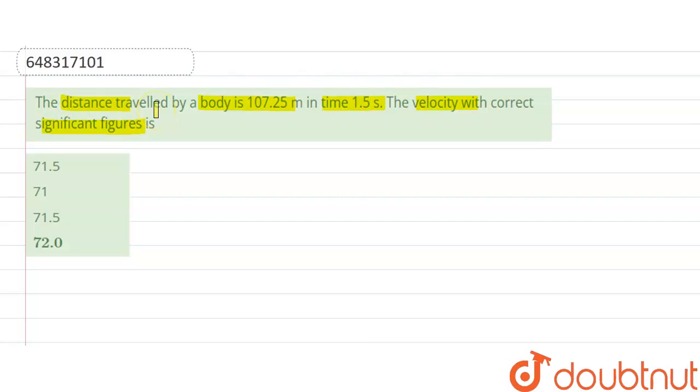So here we are asked to find out velocity with correct significant figures. Distance travelled by the body is given by d is equal to 107.25 metres and time is t is equal to 1.5 seconds.